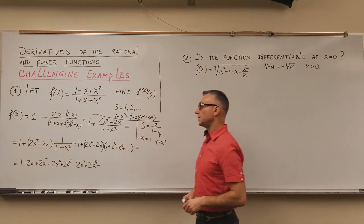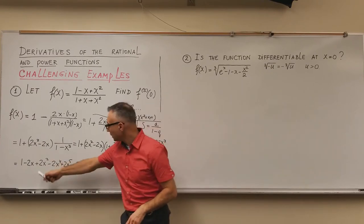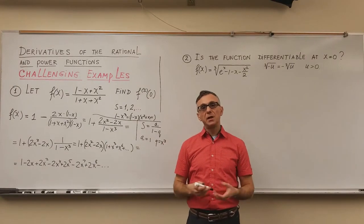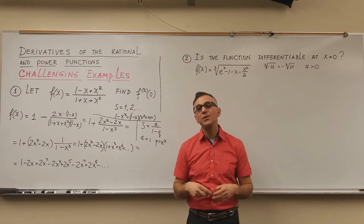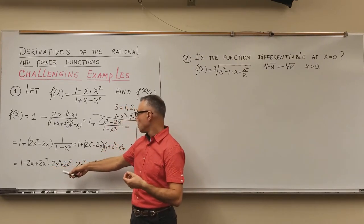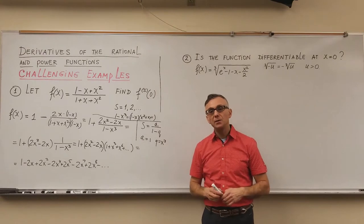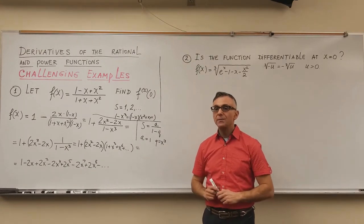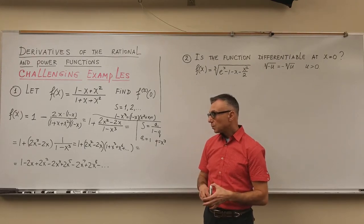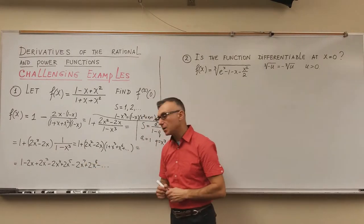Let's look at the coefficients of the series. I have coefficient minus two for powers of the variable one, four, seven, and so on — those are the powers which give remainder one when divided by three. And I have coefficient plus two for powers two, five, eight, and so on — those give remainder two when divided by three. There are no powers exactly divisible by three, such as three, six, nine — they are not there, so their coefficients are equal to zero.